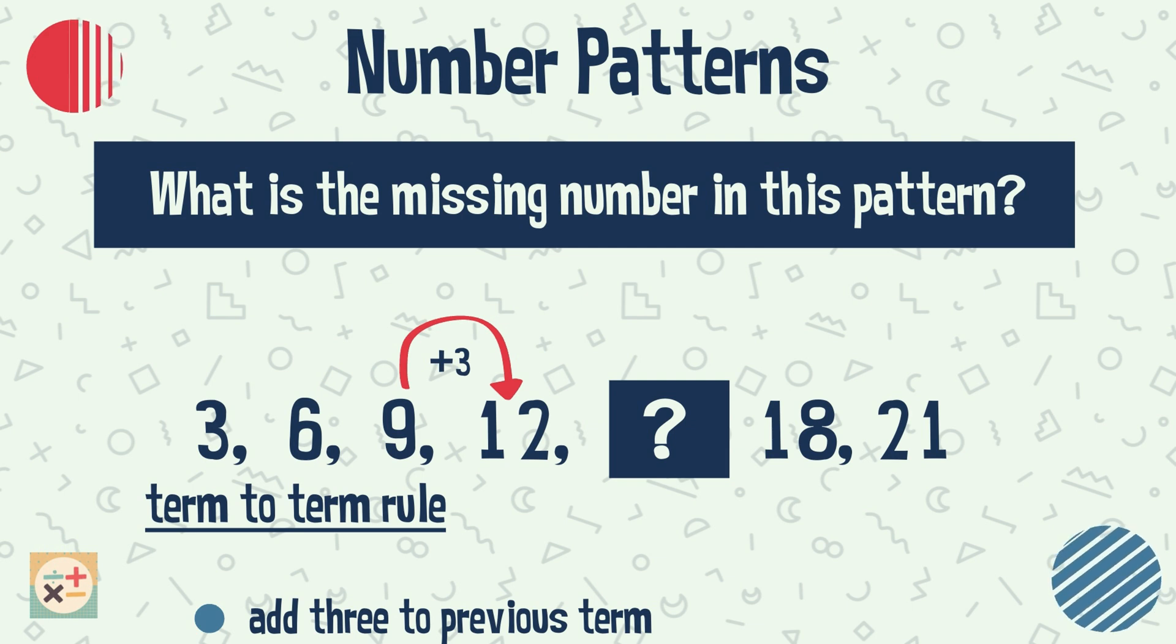If we assume this term to term rule is correct, then the missing number in the sequence is 15. Now let's check that the following terms in the sequence also fit with this rule. Therefore, we know that each term can be obtained by adding 3 to the previous term.